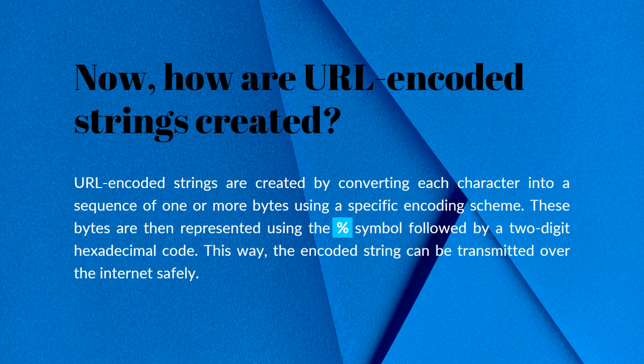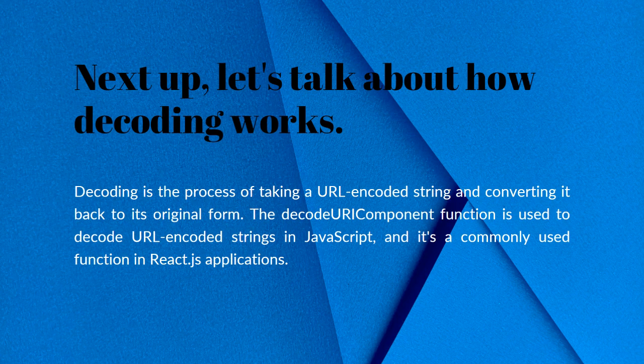URL encoded strings are created by converting each character into a sequence of one or more bytes using a specific encoding scheme. These bytes are then represented using the percent symbol followed by a two-digit hexadecimal code. This way, the encoded string can be transmitted over the internet safely.